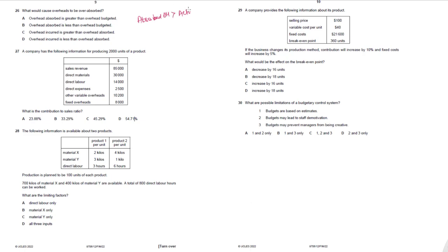Question 26. What would cause overheads to be over-absorbed? Over-absorption occurs when absorbed overheads exceed actual overheads, or when actual activity exceeds budgeted activity. Overheads absorbed greater than overheads budgeted — no, absorbed must be compared to actual. Overheads incurred greater than absorbed — no, that would be under-absorption. Overheads incurred less than absorbed overheads — yes, that means actual overheads are lower than what was absorbed. Correct option: 26D.